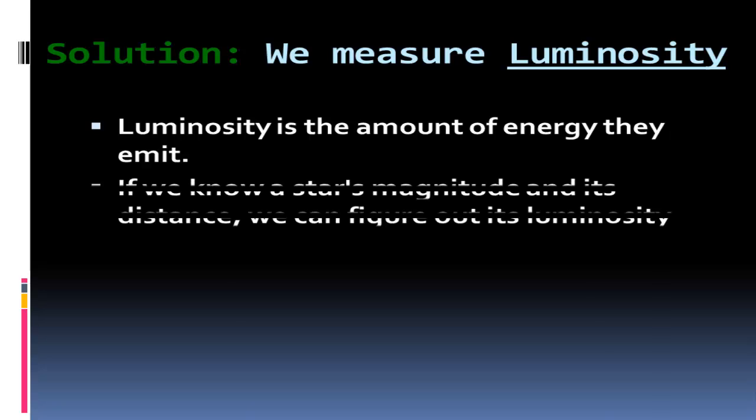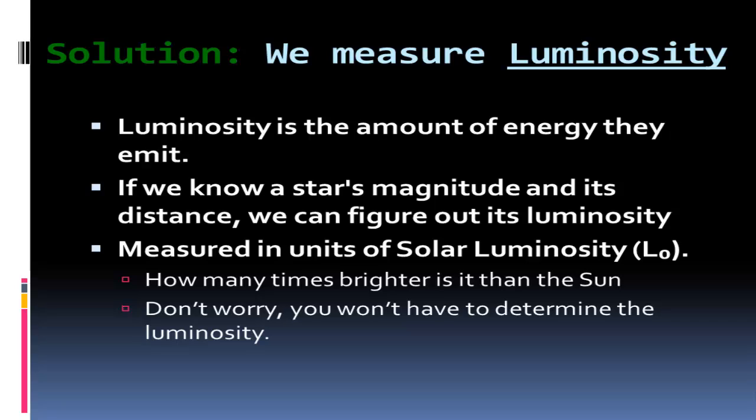If we know a star's magnitude and we know its distance - which next unit we'll get into how you can figure out distances in space - you can actually calculate luminosity. We're not going to calculate it here. What you do need to know is the units for it are in solar luminosities, L with that little circle dot in the center. That dot is representing our Sun, so it's compared to our Sun - is it two times, ten times, a thousand times brighter, or is it half as bright?